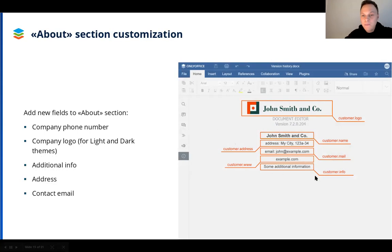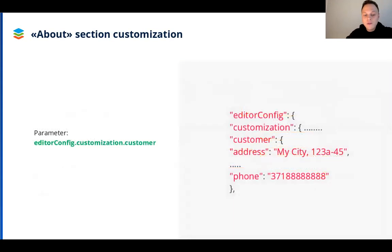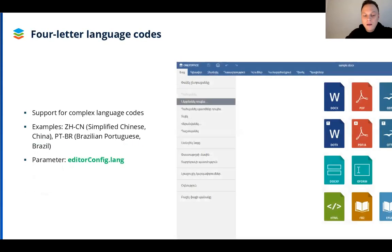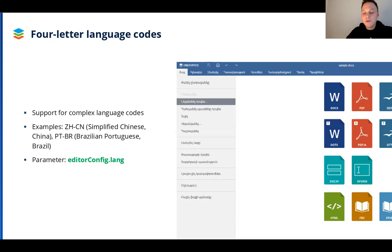This is how it looks when completely filled in. You should use the customer parameter in the editor config to add the new fields. Also, Docs now supports four-digit language codes to specify in the editor configuration. This isn't about supporting new languages — it's more for the config. Four-digit language codes are mainly used for specific dialects, like simplified and traditional Chinese, or the Brazilian and Portuguese versions of Portuguese.